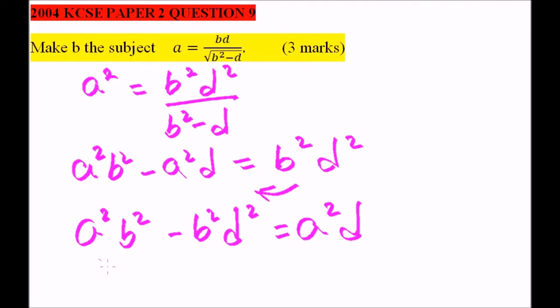Then factor out b, so we have b squared into bracket a squared minus d squared is equals to a squared multiplied by d.